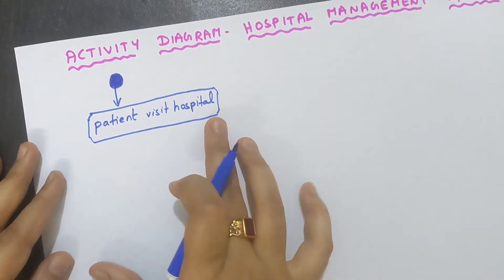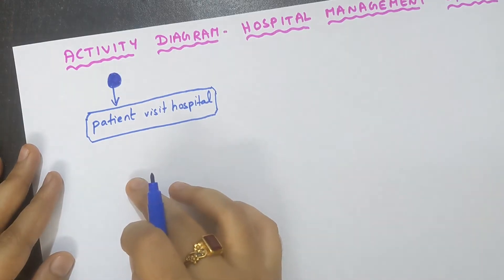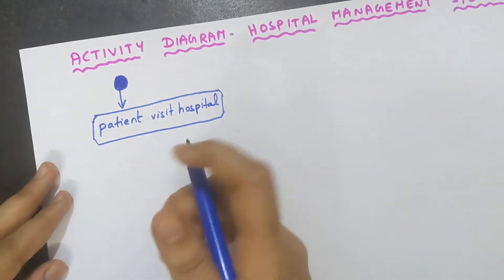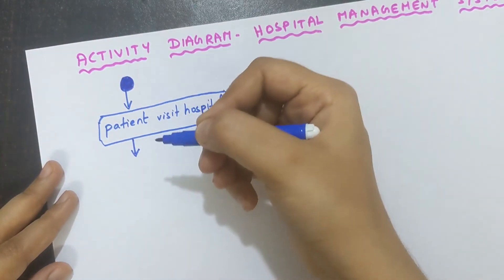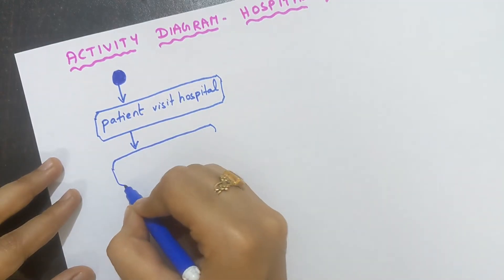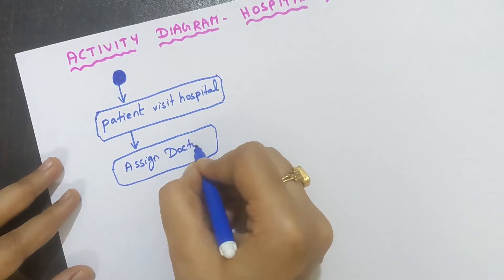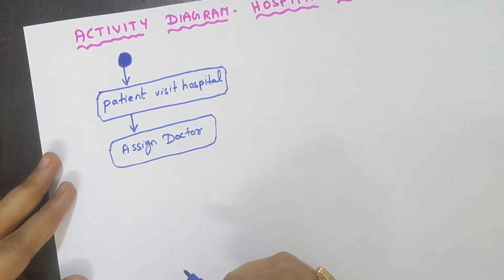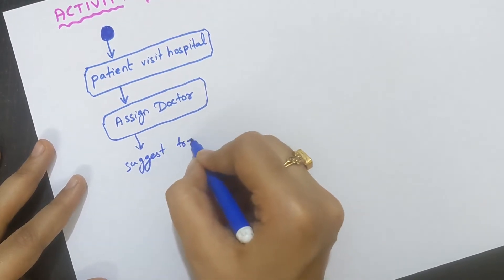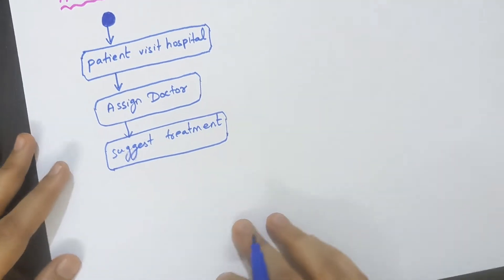After the patient visits the hospital, the next step is that a doctor will be assigned to the patient. First, they will ask the patient what the problem is, and depending on the problem, a doctor will be assigned. Draw a downward arrow and add the activity 'Assign Doctor.' After that, the doctor will suggest the treatment for the patient — so the next activity is 'Suggest Treatment.'